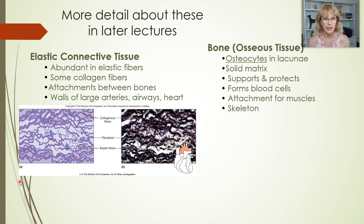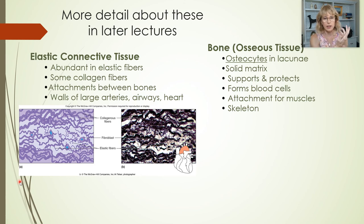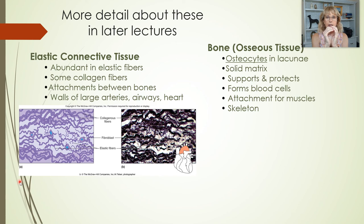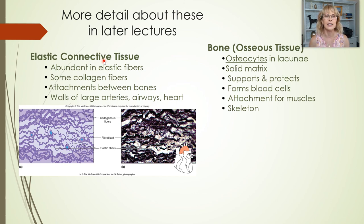Now let's talk about elastic connective tissue. Elastic connective tissue is super important in our arteries. When you take your pulse and you feel that little bump, bump, bump against your fingertips, what you are feeling is the artery stretching and then snapping back — just like inflating a balloon and letting it go. That's what you're feeling when you're feeling a pulse.